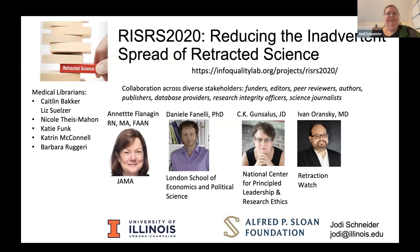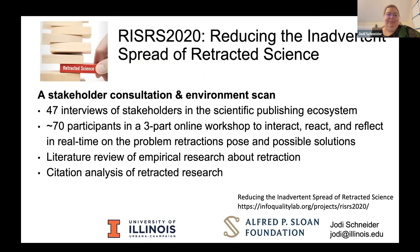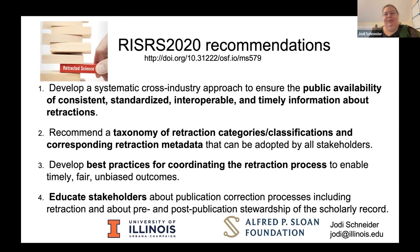I've been working for a few years to figure out how to reduce the inadvertent spread of retracted science. We did interviews and a three-part workshop in 2020 to understand what can we do about reducing the inadvertent spread. We came up with recommendations that we need public availability of consistent, standardized, interoperable, timely information about retractions. We need metadata and taxonomy — very straightforward pieces: is something withdrawn, retracted, or is there an expression of concern? Best practices are needed to coordinate the retraction process, and education for stakeholders.